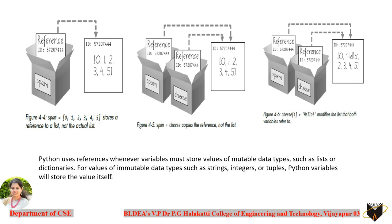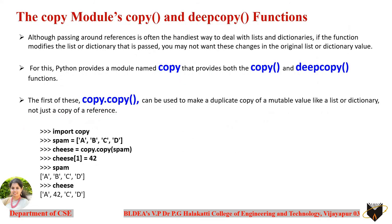In some scenarios you may actually want to duplicate the values into a new list variable rather than share a reference. You can do this using the copy module. The methods from this module are copy() and deepcopy(). These allow you to actually duplicate the values from a list and store them into a new list variable.